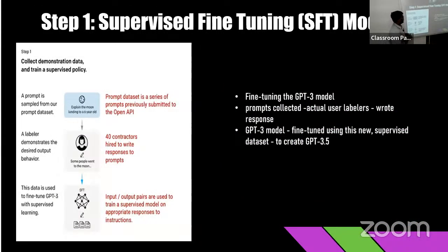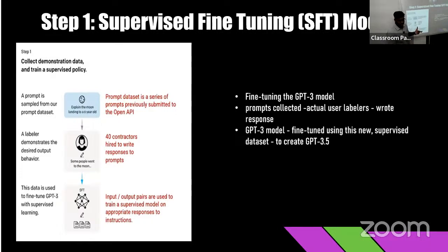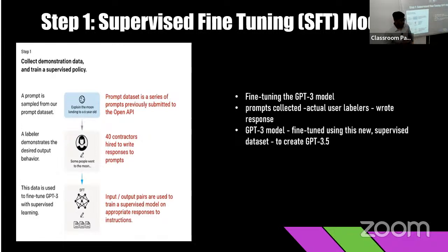Now we will look at how the ChatGPT model was trained. We have a pre-trained GPT model and we use a prompt — a prompt is nothing but user input. From the trained data on which the model was trained, we take one of those trained questions and give it to the Supervised Fine-Tuning model, the SFT. The labeler is responsible for giving the questions and also for the desired outcome. After giving it to the labeler, it is now in supervised form and then given to the SFT model. The SFT model then upgrades the parameters and passes it to the next step.